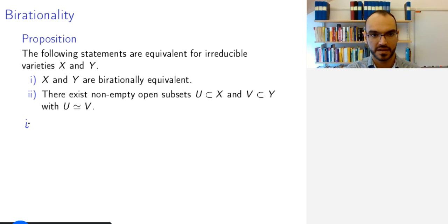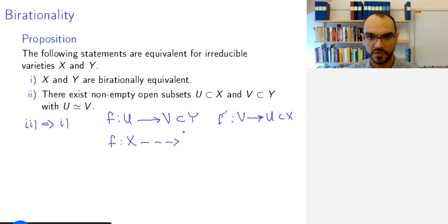Well, why is that? So, why are these two properties equivalent? Two implies one. This is because if you have an isomorphism from U to V, and V is included in Y and also a g from V or rather f inverse from V to U included in X, then by definition f is a rational map from X to Y and it is going to be birational because it is dominant since its image is this V and f inverse the same and composing them gives you the identity on dense open subsets.